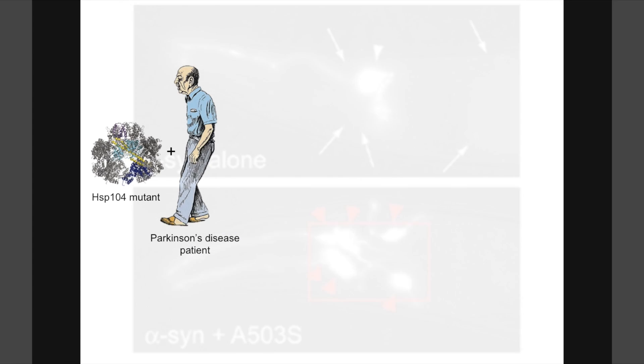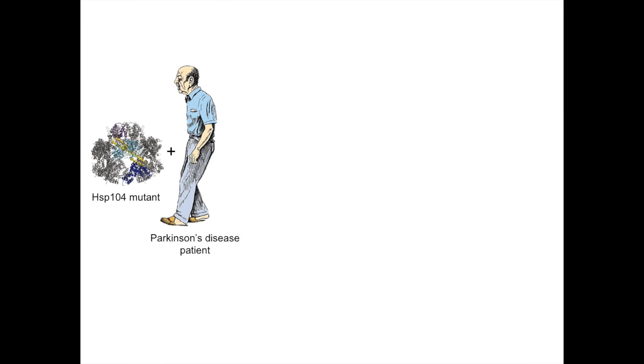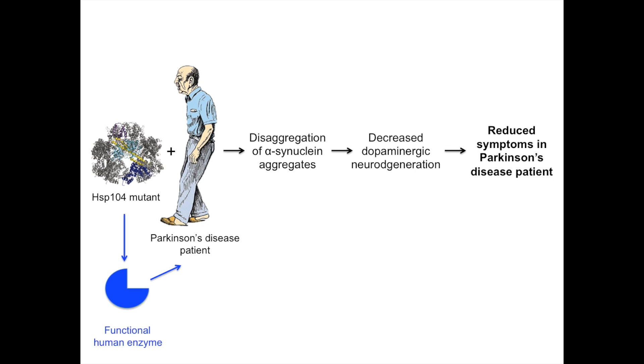These results demonstrate that HSP-104 mutants could potentially be given to Parkinson's disease patients in order to alleviate disease symptoms, such as aggregation of alpha-synuclein fibrils and degeneration of dopaminergic neurons. Still, a major challenge of introducing HSP-104 as a therapy for Parkinson's disease is determining a way to introduce it as a functional enzyme into neurons.